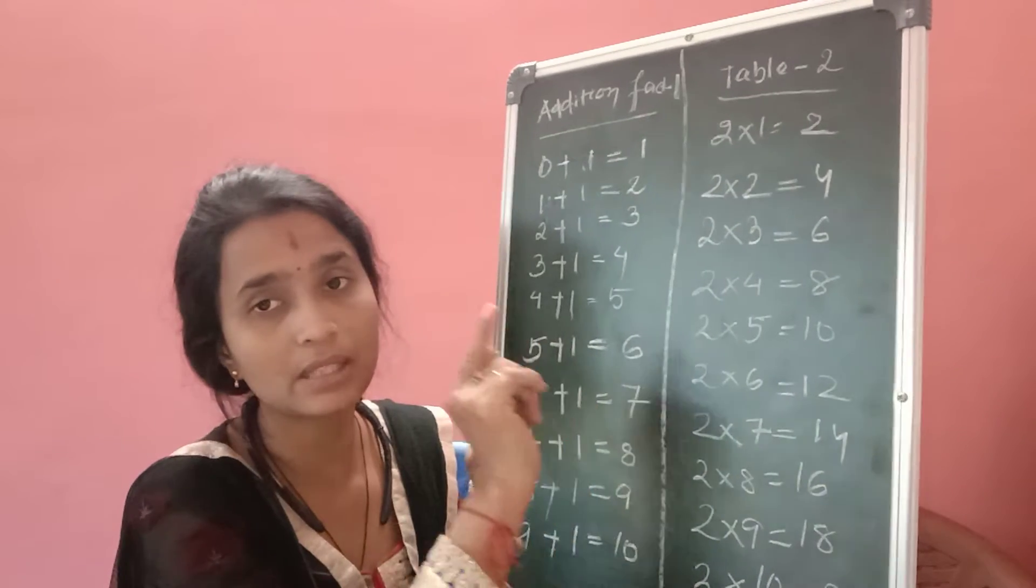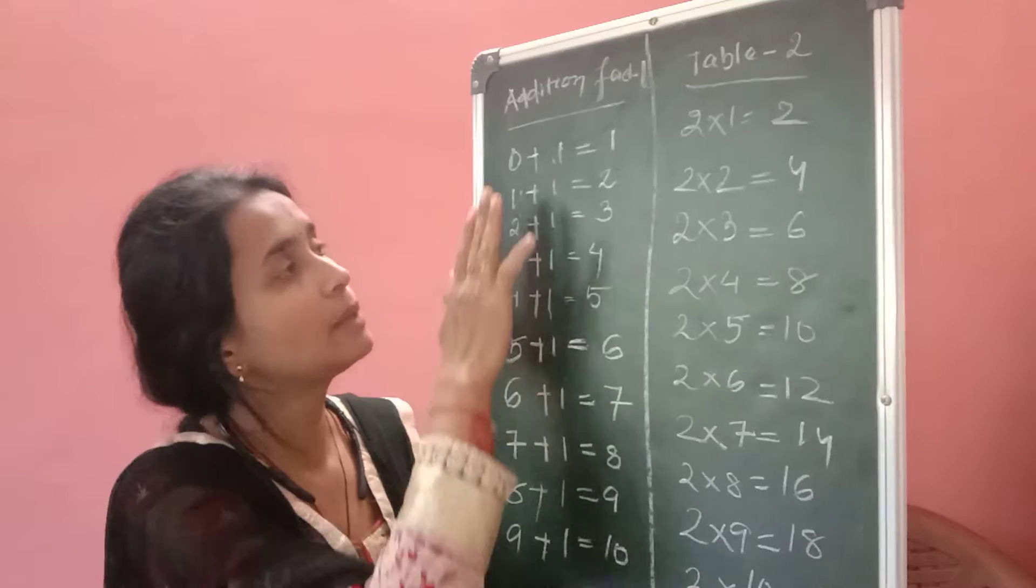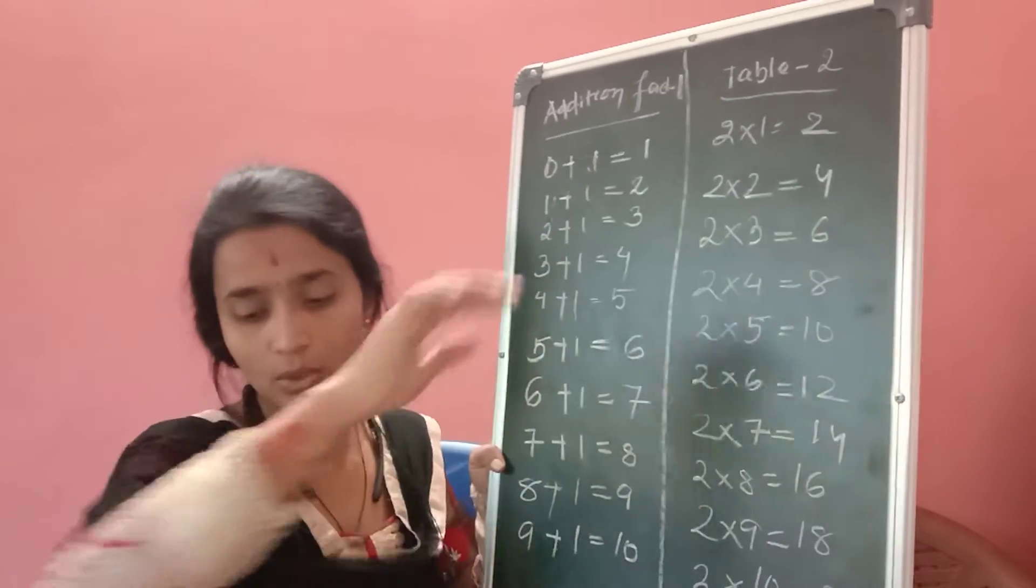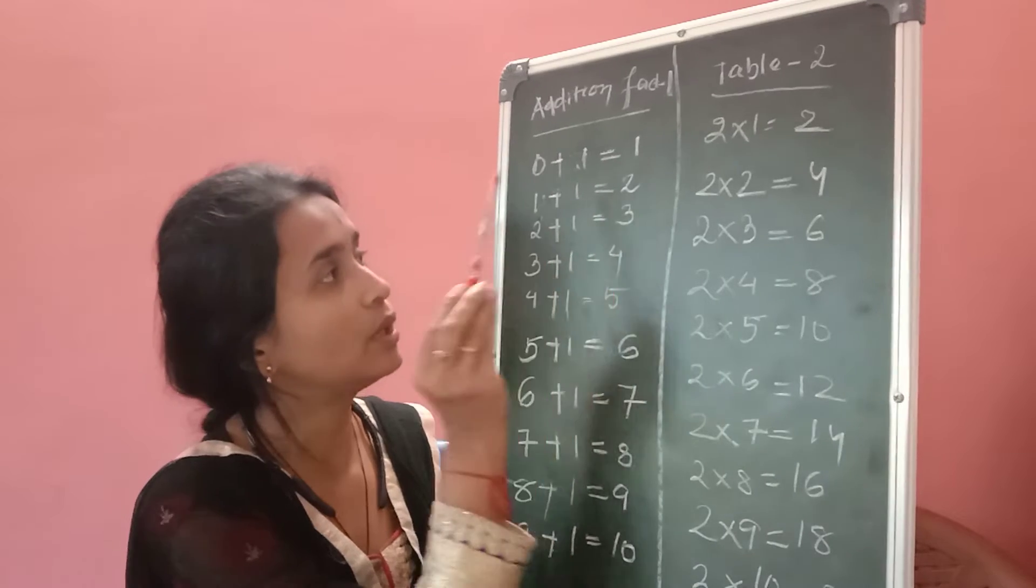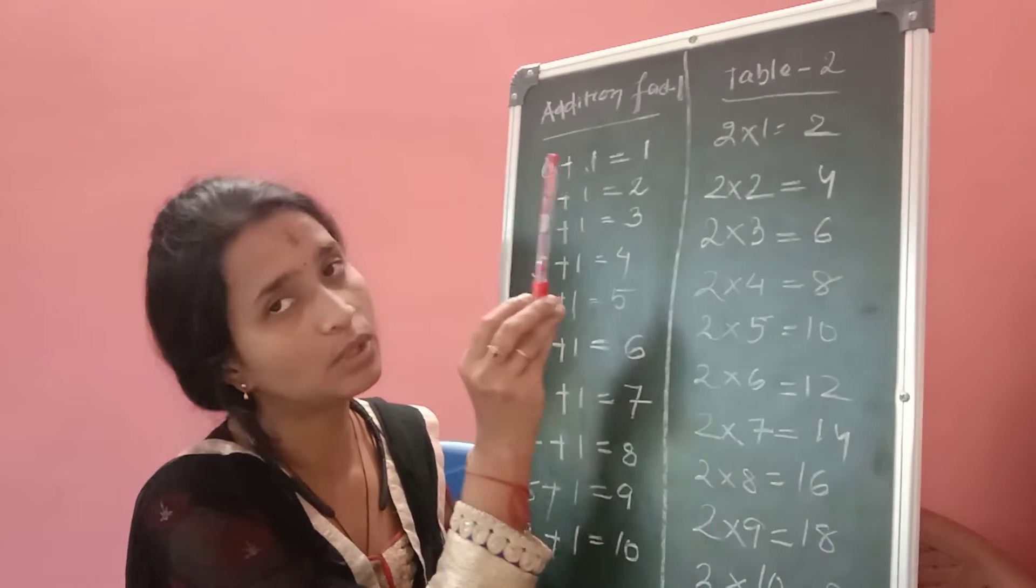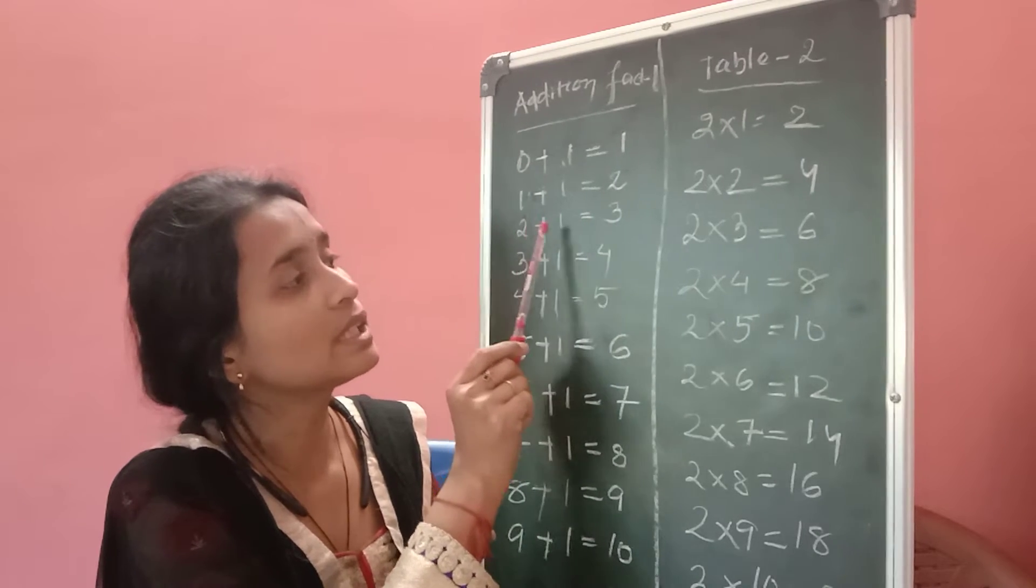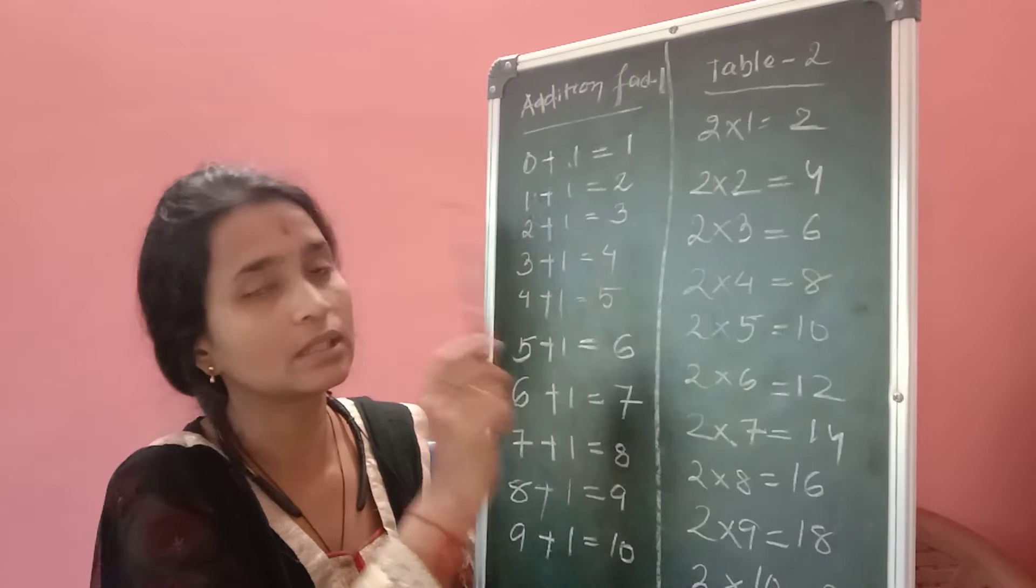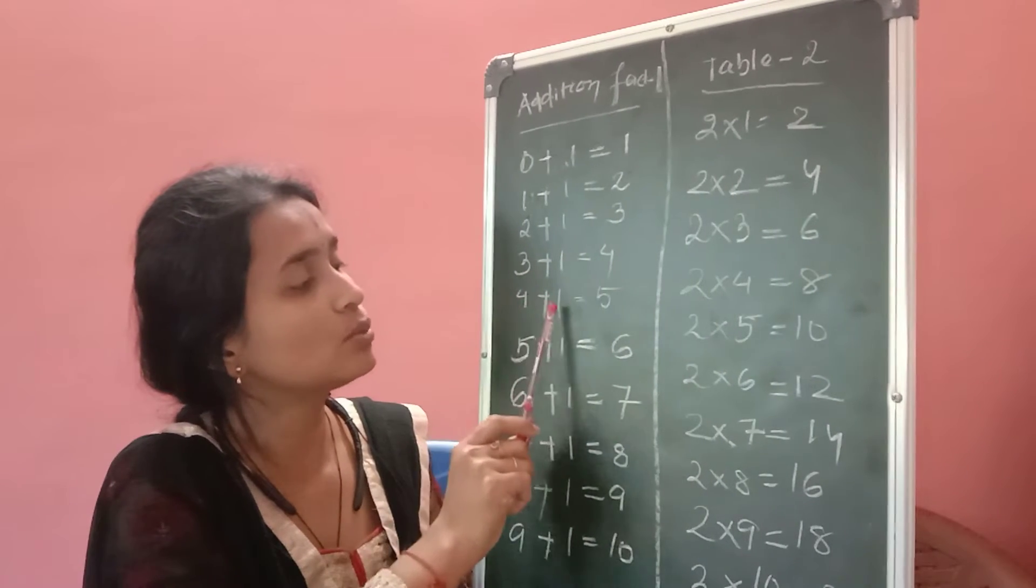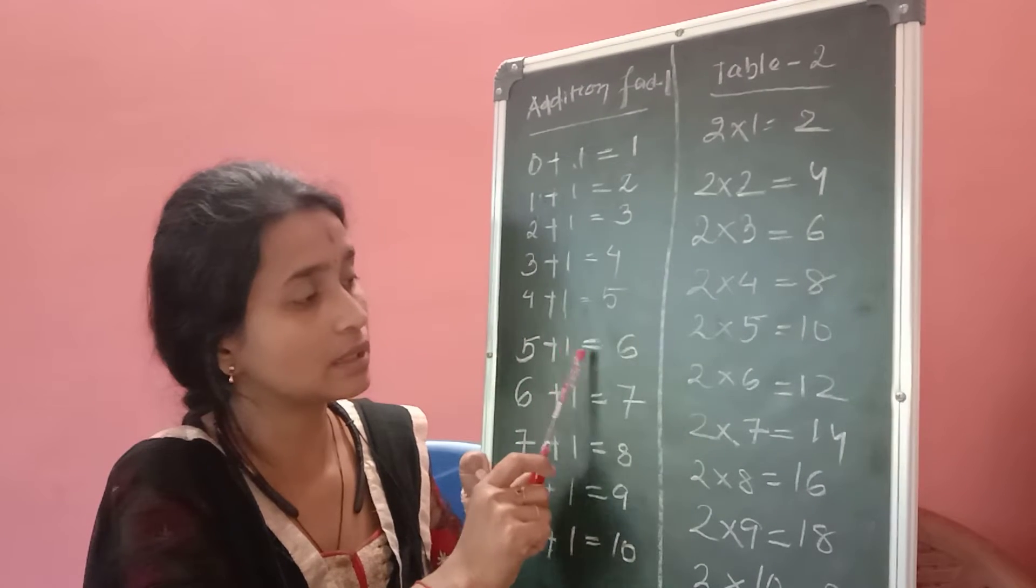Here first is 0+1=1, 0+1=1, 1+1=2, 2+1=3, 3+1=4, 4+1=5, 5+1=6.